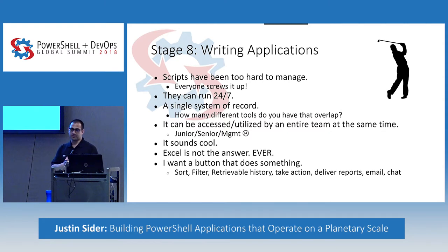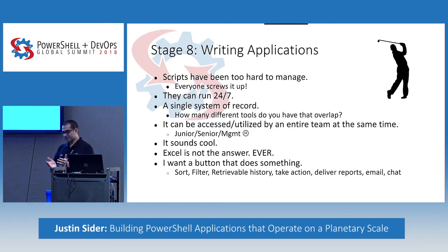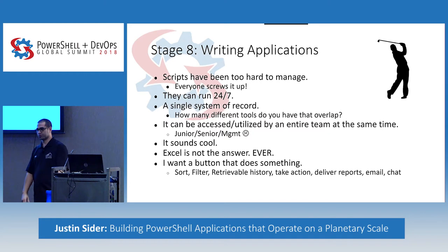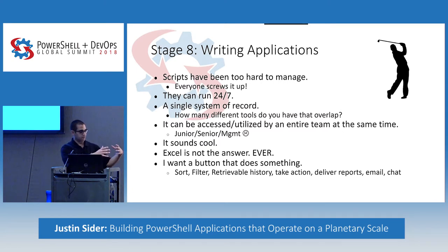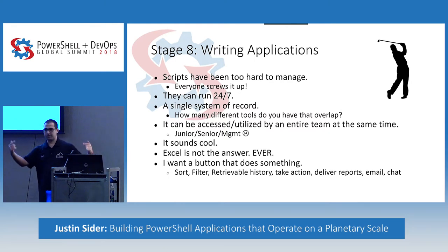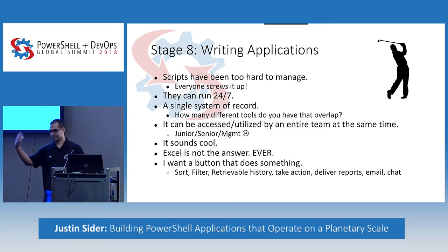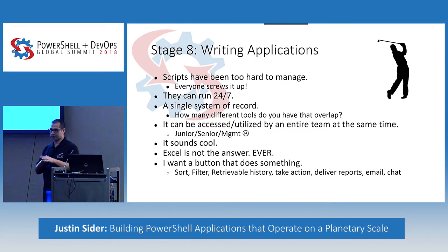The most important thing for applications is that you really want a single system of record. This is a trap I fell into and I'm still recovering from. You can easily stand up a service in Germany — 'this is my Germany VMware configuration management tool' — and that's great for Germany. But then you set up one in the US, and you start moving assets and workloads, and now your configuration management is off. The Germany site doesn't know about the US site and vice versa, so you get conflicting information. A single system of record is going to be best.